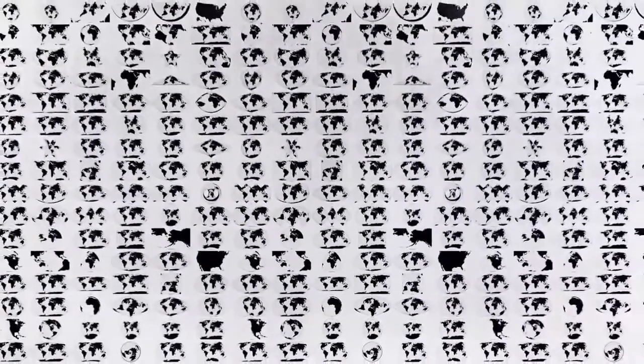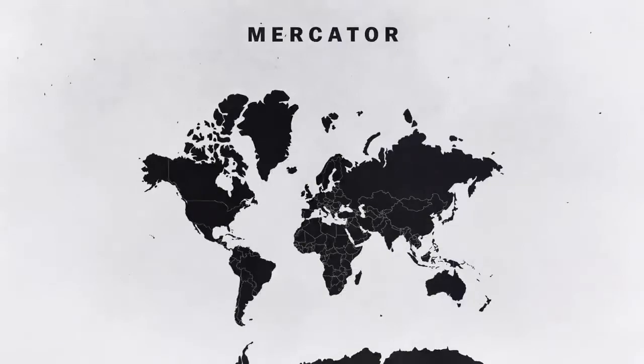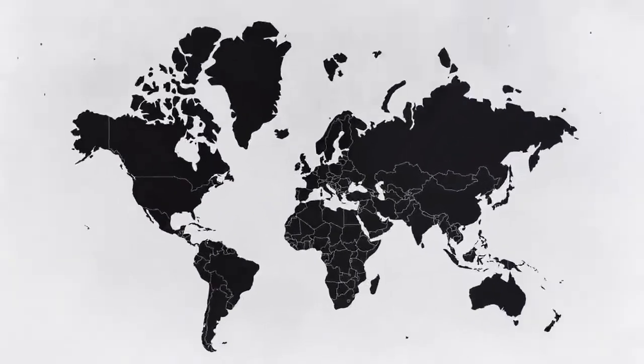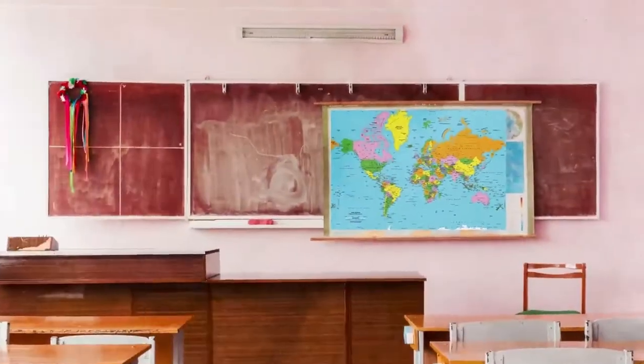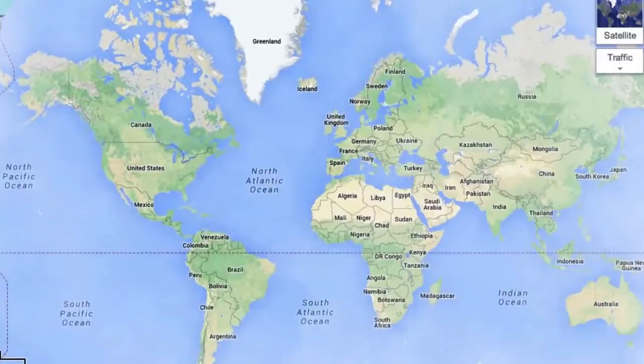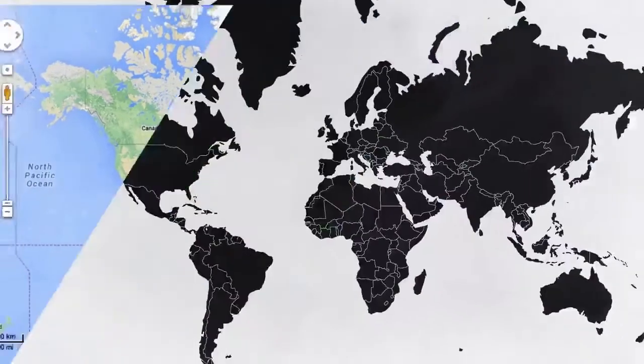Here's an example. This map is called the Mercator projection. If you're American, you probably studied this map in school. It's also the projection that Google Maps uses.